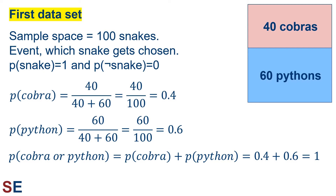For our certain and impossible events, the probability of choosing an individual and it is a snake is certain, so that probability is 1, whereas the probability of choosing an individual and it is not a snake is impossible, so that probability is 0.